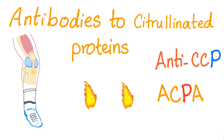Antibodies to citrullinated proteins — anti-CCP and ACPA — to citrullinate or not to citrullinate, this is the question. This is Metacosis Perfectionalis continuing our series on rheumatology. In the previous video we discussed rheumatoid factor, C-ANCA, and P-ANCA, which is the antineutrophilic cytoplasmic antibody. Today it's time to citrullinate — let's roll up our sleeves and get to work.